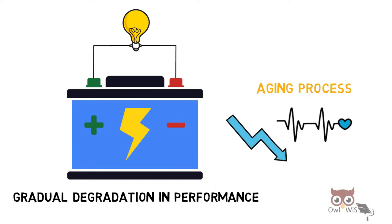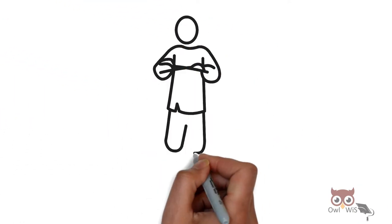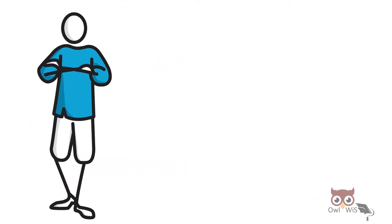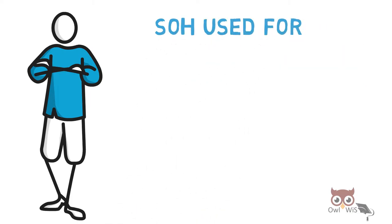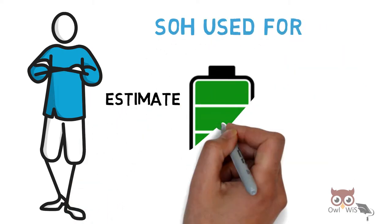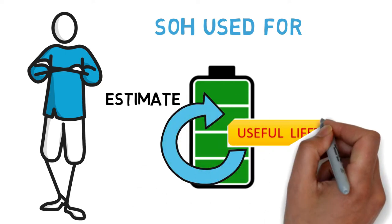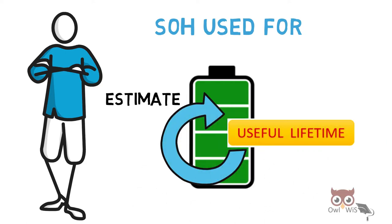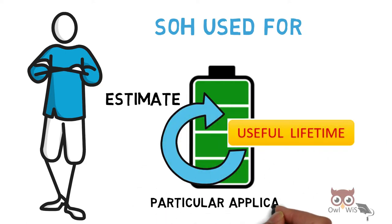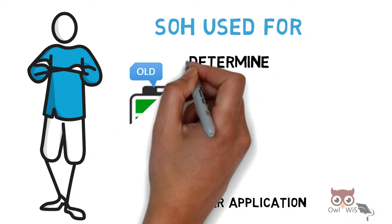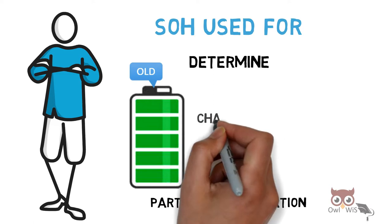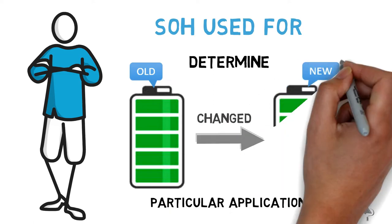This aging process decreases the State of Health of the battery. SOH is used to estimate the battery's useful lifetime in a particular application, and it also determines when the old battery needs to be replaced with a new one.